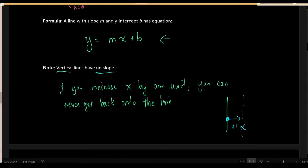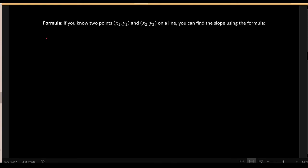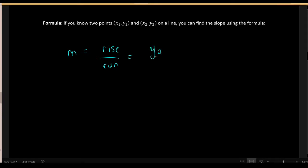If you happen to know two arbitrary points on a line, you can calculate the slope using what's colloquially called rise over run. You take the final y value, y₂, minus the initial y value, y₁, and divide by the final x minus the initial x. This formula measures the slope given any two points on the line.